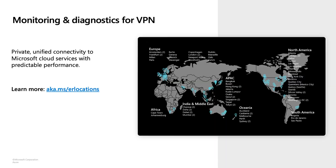Now I want to shift gears and talk about ExpressRoute. In contrast with VPN, which traverses over the public Internet, ExpressRoute is a private connection. Once you are on an ExpressRoute connection, you have access to all Azure services.